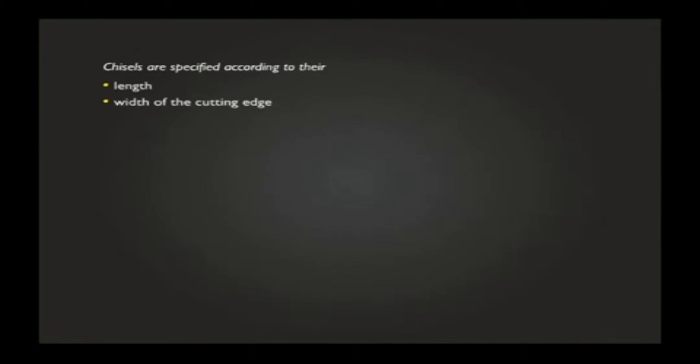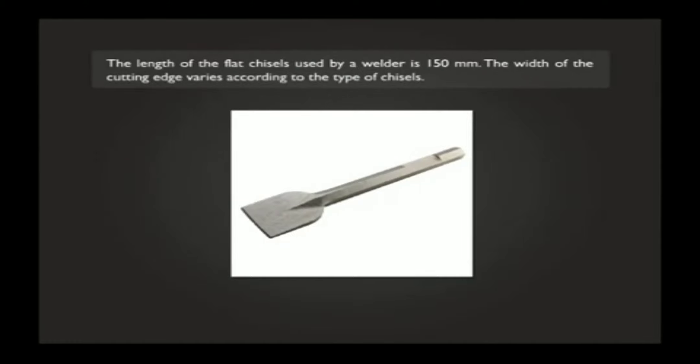Chisels are specified according to their length, width of the cutting edge, type, and cross section of the body. The length of the flat chisels used by a welder is 150 mm. The width of the cutting edge varies according to the type of chisels.